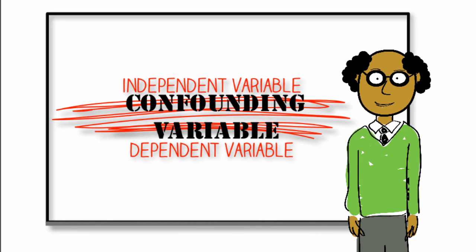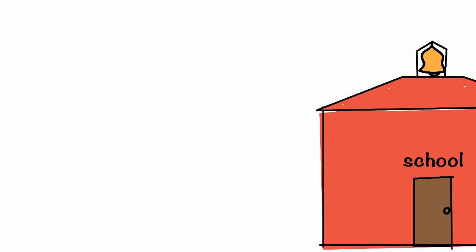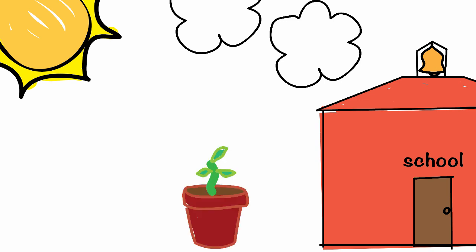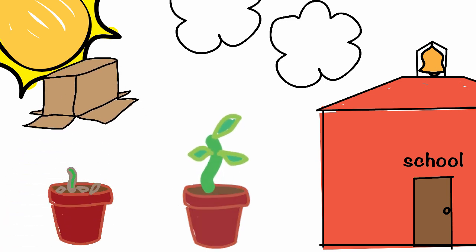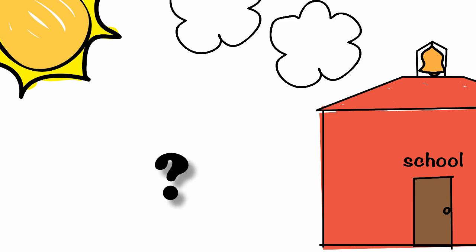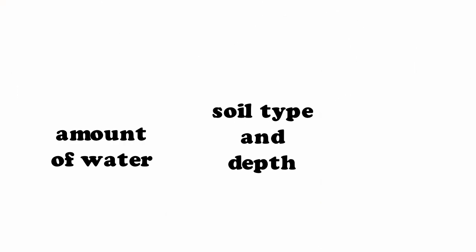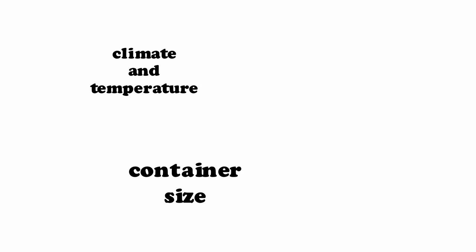To better understand what I mean, let's take an experiment that's been done in grade schools for generations — let's see whether sunlight makes plants grow. You start your plant growth experiment by placing one plant in the sunlight and one in the darkness, and then you wait. When you see that one of your plants is doing better than the other, you automatically assume it's due to the sunlight. But you may be wrong. Did you accurately measure the water given to each? Or how about the soil and air temperature, the size of the containers, or even the location? These are all extraneous variables.